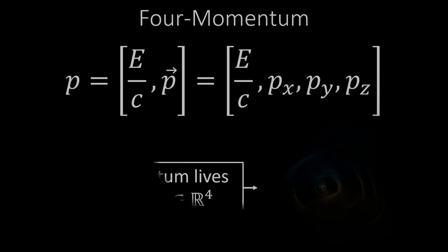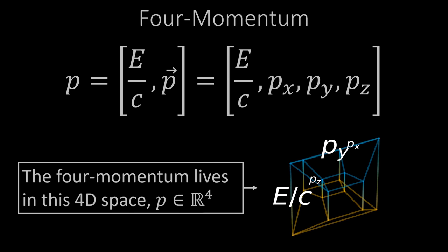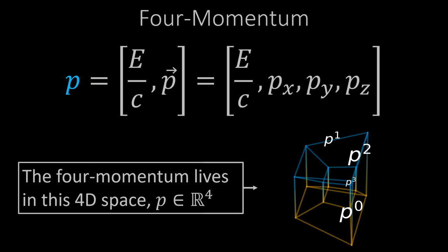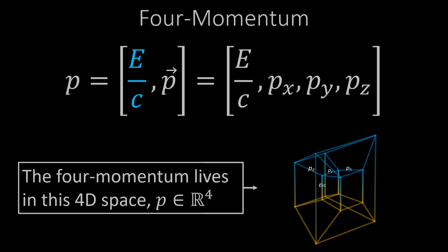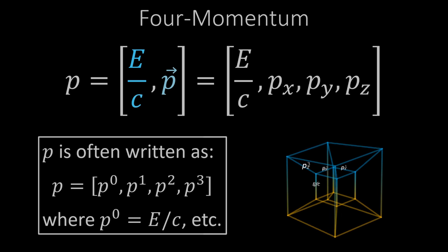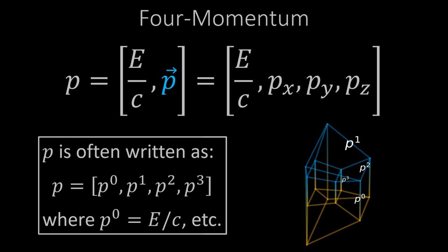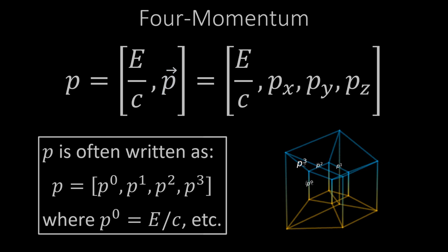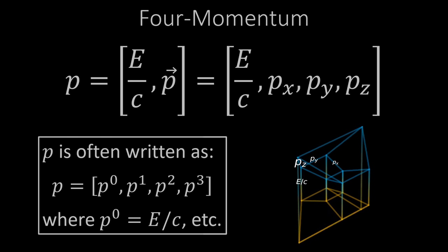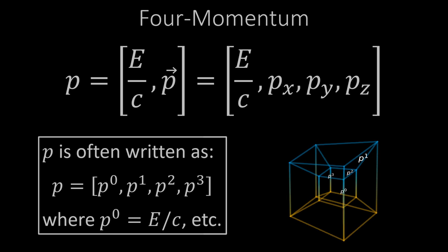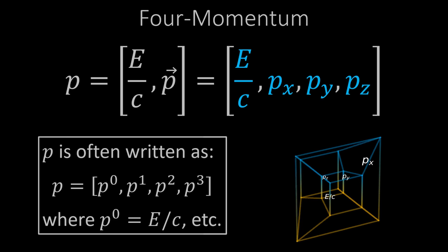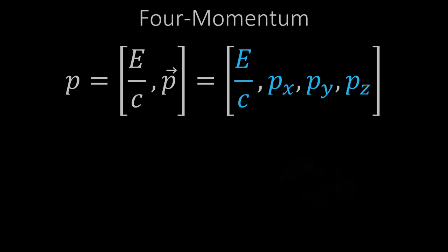There are three things you need to know. Number one: if you have a relativistic particle floating through empty space, you can combine its energy and momentum into a single vector — a four-vector called the four-momentum. The first term is energy divided by the speed of light, since dividing energy by speed gives momentum. The following three components are the components of the momentum vector. Energy corresponds to time and momentum corresponds to space. In relativity, you combine these into the four-momentum, which encapsulates all of that energy-momentum business into a single relativistic four-vector.